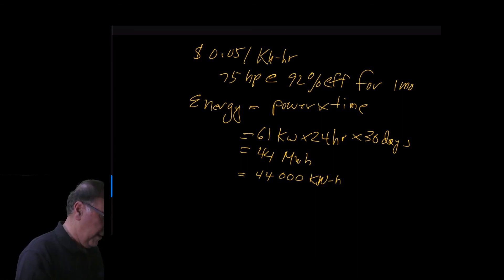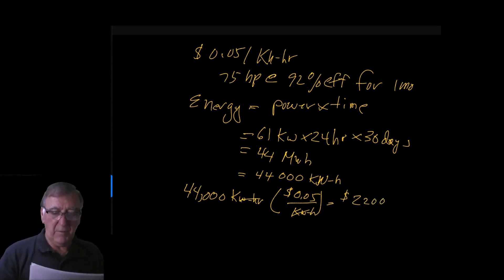And looking at the cost, we would say that we have 44 thousand kilowatt hours times the rate cost 0.05 cents per kilowatt hour. Again using our dimensional analysis here, this goes out, this goes out, and that equals $2200. So every month it would cost you $2200 to run a 75 horsepower motor 24/7.